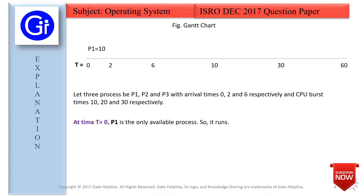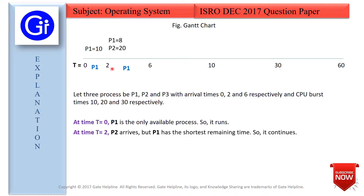At time t=0, P1 arrives and P1 is the only available process, so it will run until another process arrives. At time t=2, P2 arrives, but P1 has the shortest remaining time — P1 has a remaining burst of 8 (started with 10, ran for 2), and P2 has a burst of 20. Since 8 is less than 20, we continue with P1.